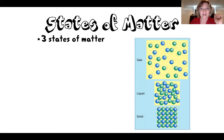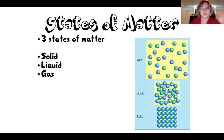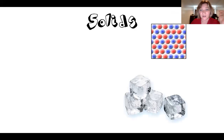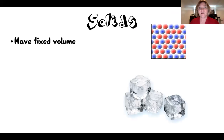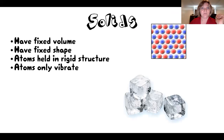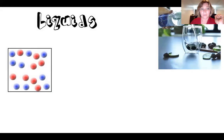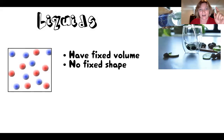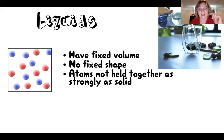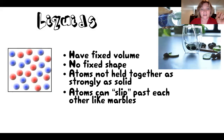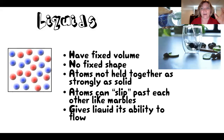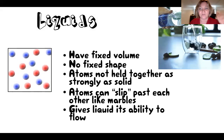There are three states of matter: solid, liquid, and gas. Solids have a fixed volume and a fixed shape — the atoms are held in a rigid structure, they don't move around, they just vibrate. Liquids have a fixed volume but do not have a fixed shape because the atoms are not held as tightly together as in a solid. The atoms can slip past each other like a bag of marbles, which gives liquids the ability to flow, as you can see in the animation in the top right corner.